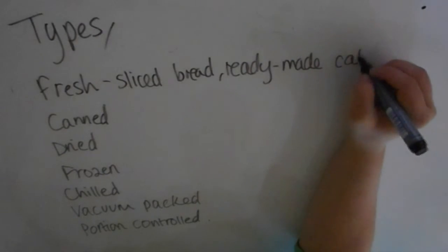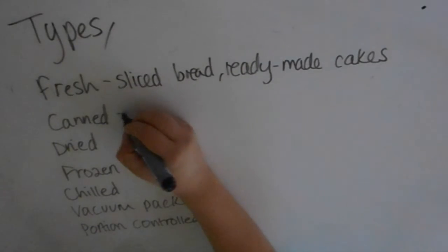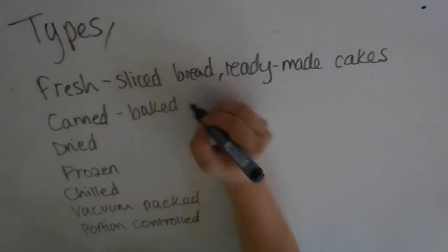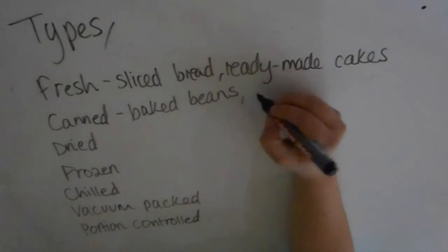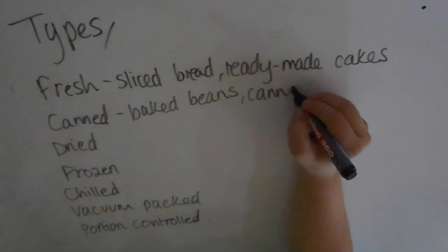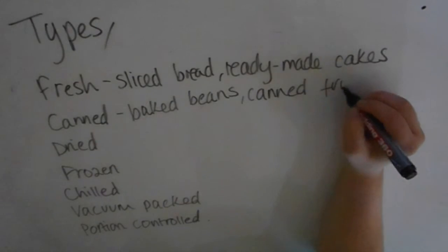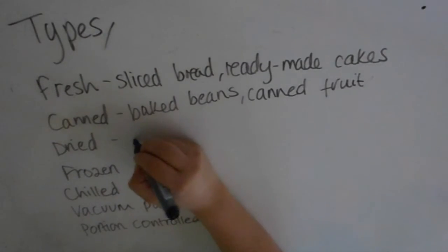There are also canned convenience products like baked beans and canned fruits. You can do all these processes yourself, but they've already been done for you. You can make baked beans yourself, but not many people would - even chefs would buy them in the canned form.